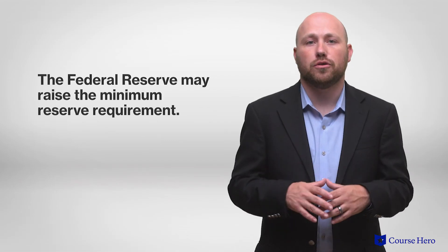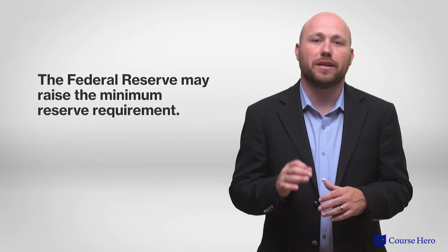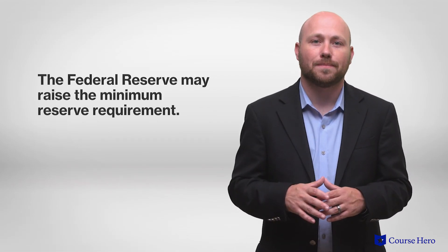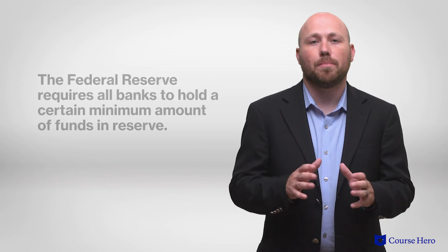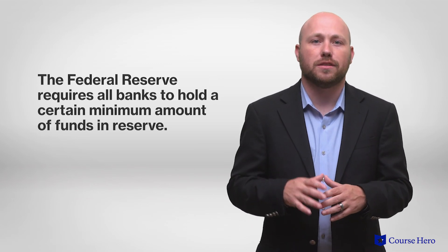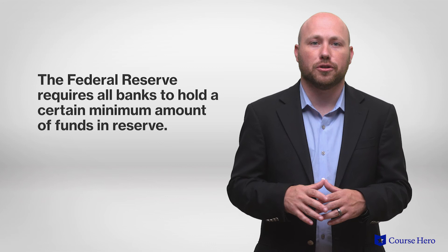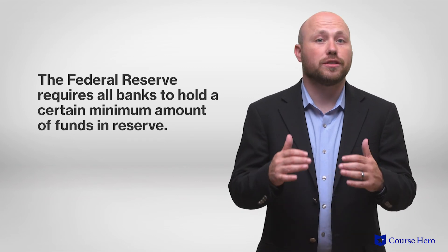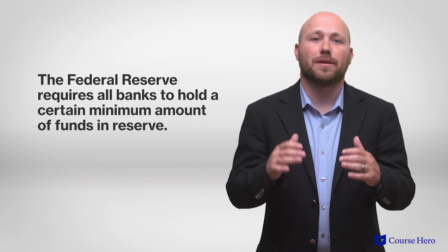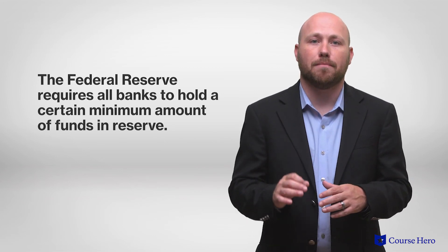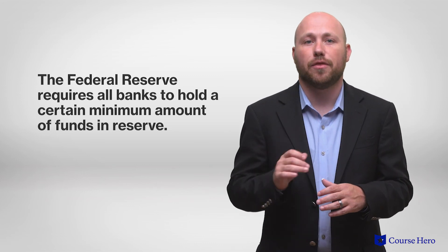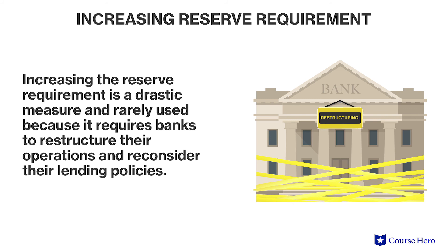Another method used to restrict the money supply is to raise the minimum reserve requirement. The Fed requires all banks to hold a certain minimum amount of funds in reserve to be used in case of emergency. By increasing the reserve requirement, the Fed can directly diminish the amount of money available to lend and thus control aggregate demand. This is a drastic measure and rarely used because it requires banks to restructure their operations and reconsider their lending policies.